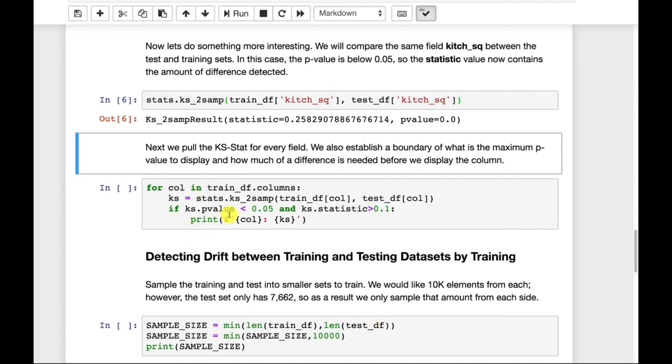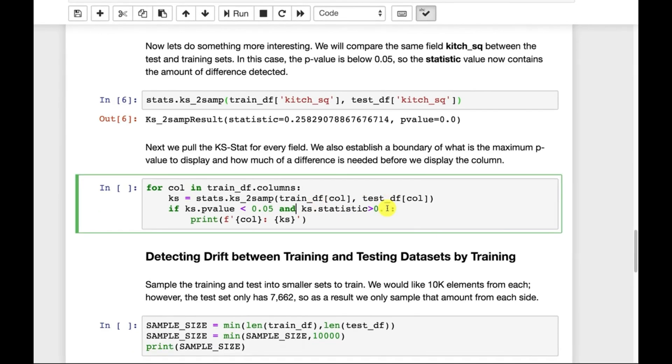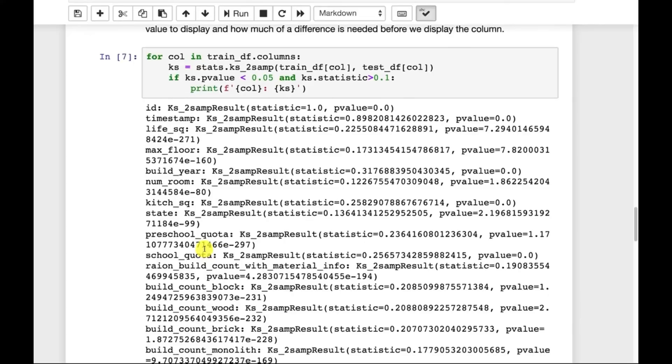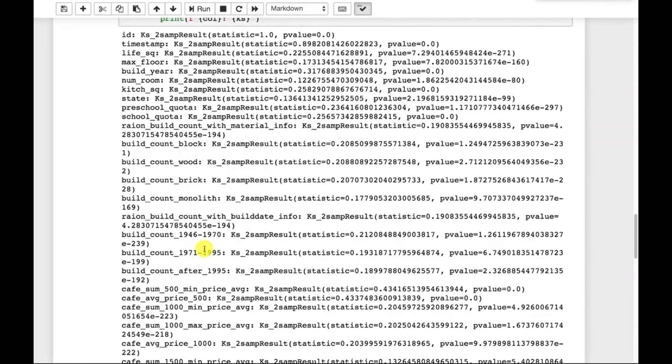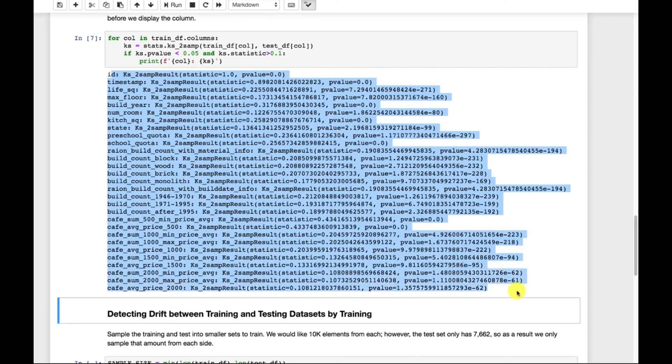So we'll run a KS statistic on everything. We'll only report the times where the p-value is less than 0.05 and the KS statistic is greater than 0.1. Now the statistic, this is somewhat tied to the units of the measurement. So you have to look at these really relative to everything else in the values that you're actually measuring. And as it runs through, you can see this works better if I shrink the font size, but then it's harder to read. But this shows you all of the columns and the ones that had substantial enough differences.